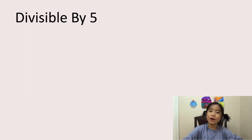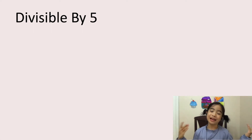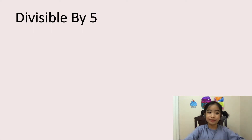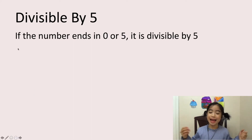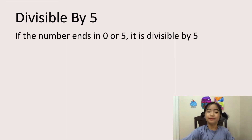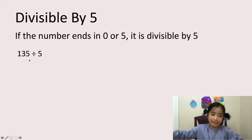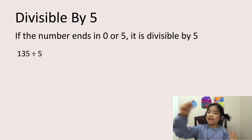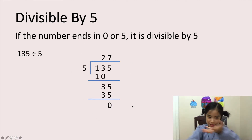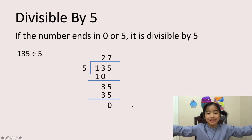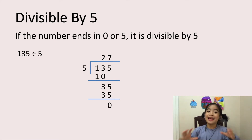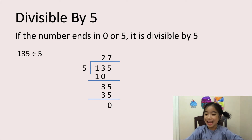Now let's look at divisible by 5. So 5 is a very special number. I think you know the rule. The rule is, if the number ends in 0 or 5, it is divisible by 5. Let's look at my example: 135 divided by 5. So 135 ends in a 5, so it is divisible by 5. Here is my long division. And I'll leave the number that ends in 0 for you to figure out.